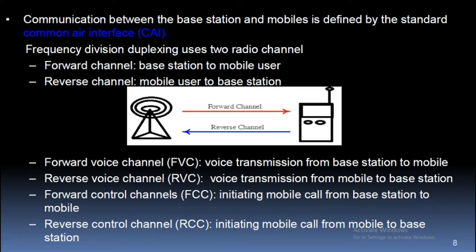Communication between the base station and mobiles is defined by the standard Common Air Interface. Frequency Division Duplexing uses two radio channels: the forward channel, from base station to mobile user, and the reverse channel, from mobile user to base station. The forward voice channel (FVC) carries voice transmission from base station to mobile, and the reverse voice channel (RVC) carries voice transmission from mobile to base station.